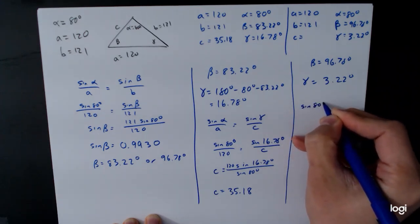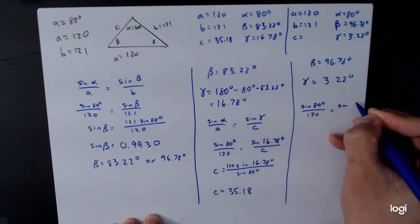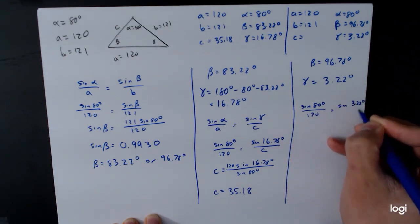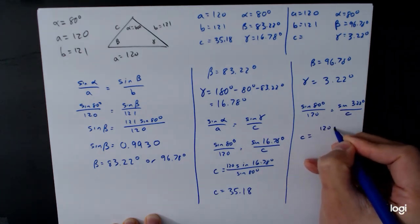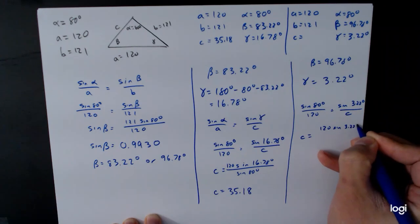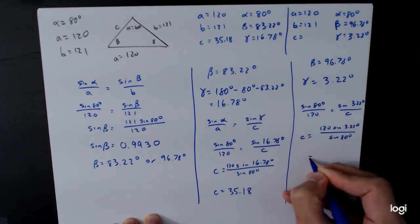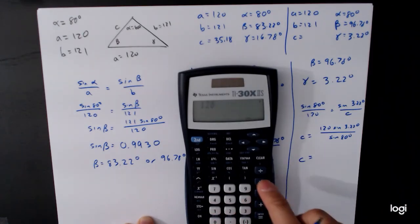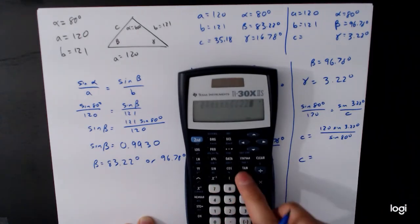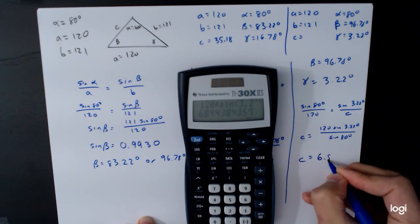Sine of 80 degrees, that's sine of alpha over A, is equal to sine of gamma over C. So C is equal to 120 sine of 3.22 degrees over sine of 80 degrees, and so C is equal to 120 times sine of 3.22, divided by sine of 80, 6.84.